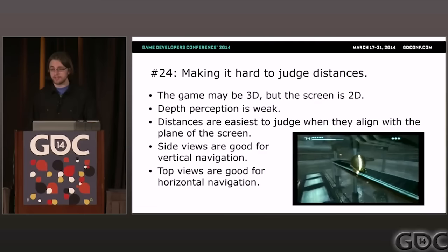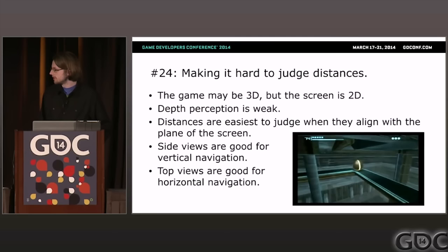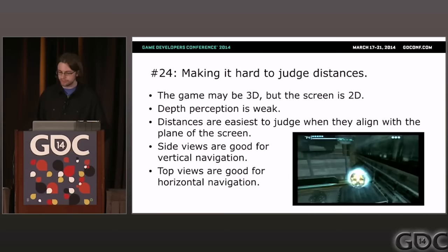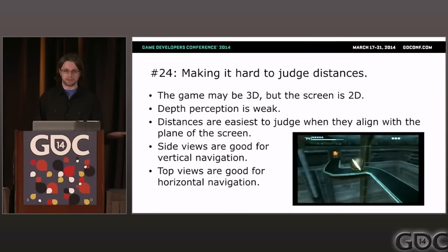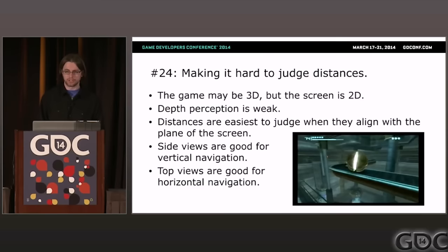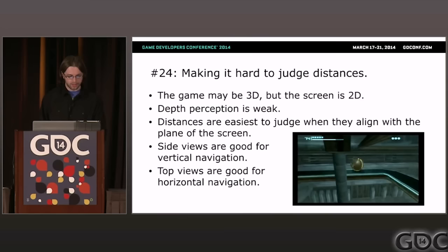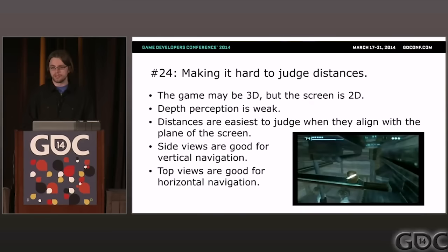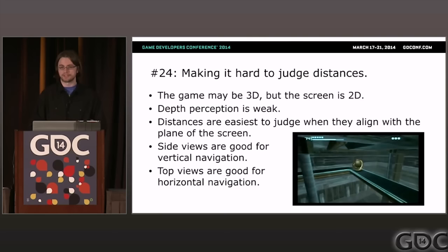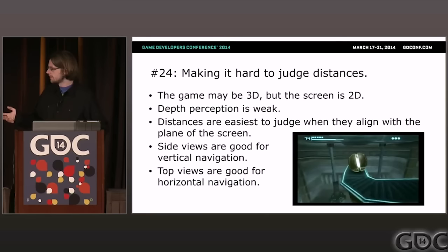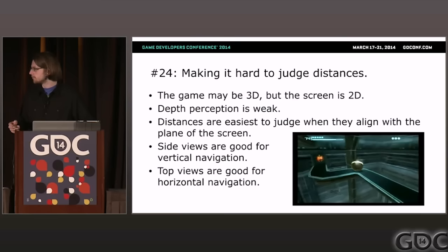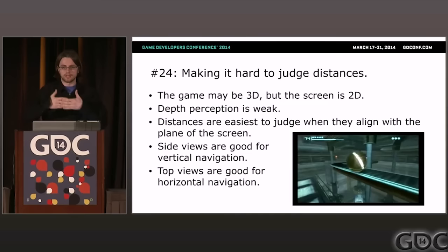Problem twenty-four: making it hard to judge distances. This game's challenge is created entirely by the camera refusing to align with the direction you're going. The screen is two-dimensional and depth perception is pretty weak — players are much better at judging distances that align with the plane of the screen. For a catwalk, the most important thing is to know how far you are from either side, which means the camera should be pointing right down the catwalk so you can align that axis with the sideways axis of the screen.